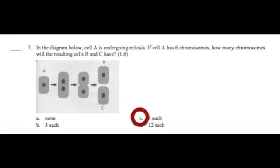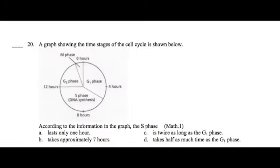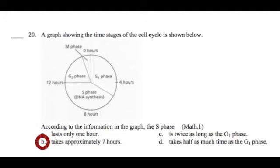Yay! A graph showing the time stages of the cell cycle is shown below. According to the information in the graph, the S phase: A, lasts only one hour, B, takes approximately seven hours, C, is twice as long as the G1 phase, or D.